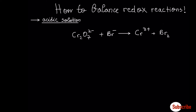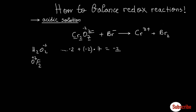In this case we have dichromate plus bromide giving chromium plus bromine. First we have to find the oxidation number. Oxygen always has oxidation number minus two, except for hydrogen peroxide (minus one) and oxygen fluoride (plus two). In all other cases it's minus two. For chromium: the oxidation number of Cr multiplied by two, plus oxygen's oxidation number minus two multiplied by seven oxygens, equals the charge of the anion, which is minus two. So chromium here is plus six.